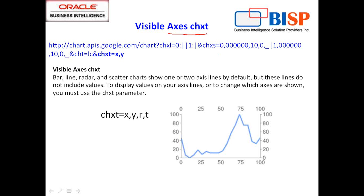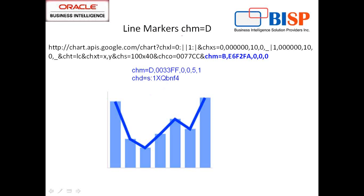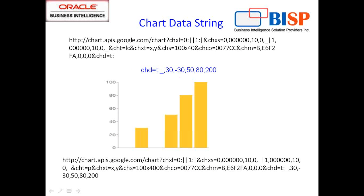The next parameter talks about visible axes — CHXT. You specify what visible axes you want — I want both X and Y axes visible. For bar, line, radar, and scatter charts you can show one or more axis lines by default, but these lines do not include values. Then there is chart size — CHS — for example 100 by 40. There is also the line marker parameter. Depending on what information you supply to the chart, the chart renders. The most important of all is the chart data string, which accepts string type — therefore when I pass a parameter from my OBIE, I make it as string type and the chart renders.